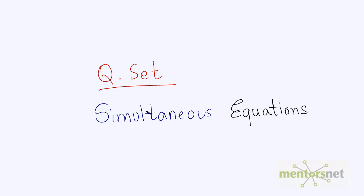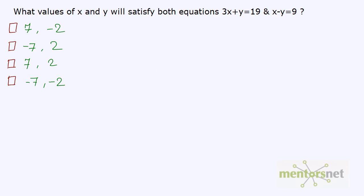Hey guys, having learned simultaneous equations, let us put our knowledge to test by solving some questions related to it. This is the first question: what are the values of x and y that will satisfy both of these equations? Let us write them and name them. We have 3x plus y is equal to 19, and x minus y is equal to 9.